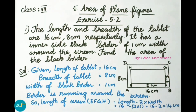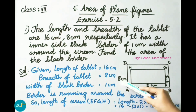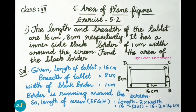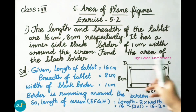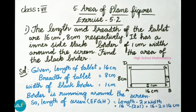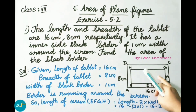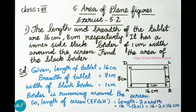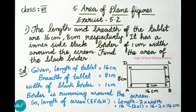Find the area of the black border. The length of the tablet is given as 16 centimeter and breadth of the tablet is given as 8 centimeter. The tablet has a black border with width 1 centimeter. The border is running around the screen in the middle. EFGH is the screen of the tablet and the black border is around the screen.